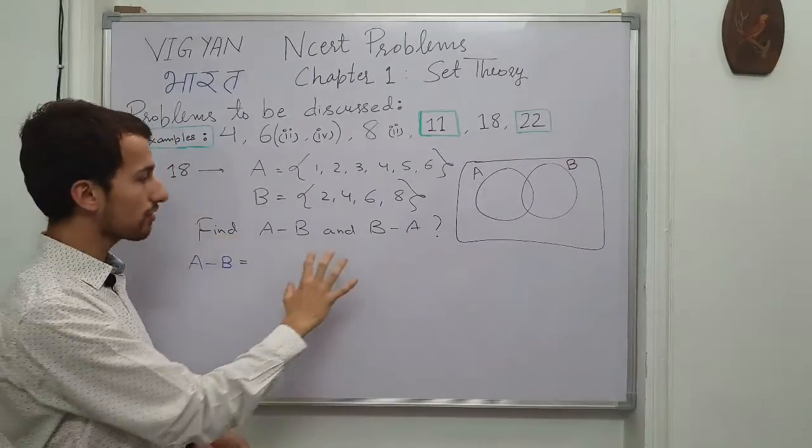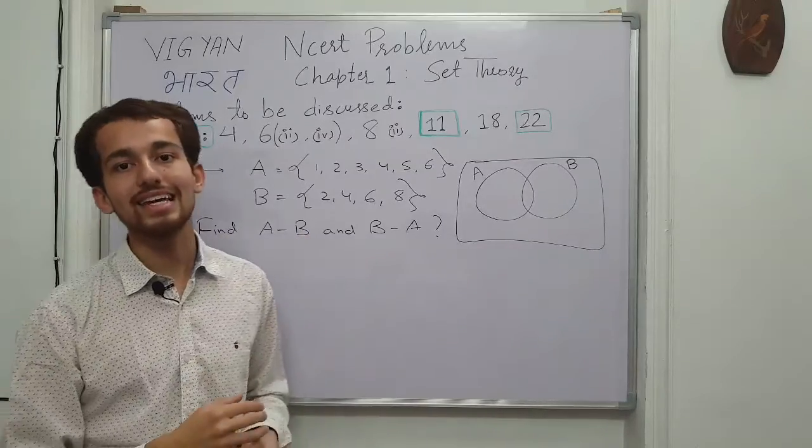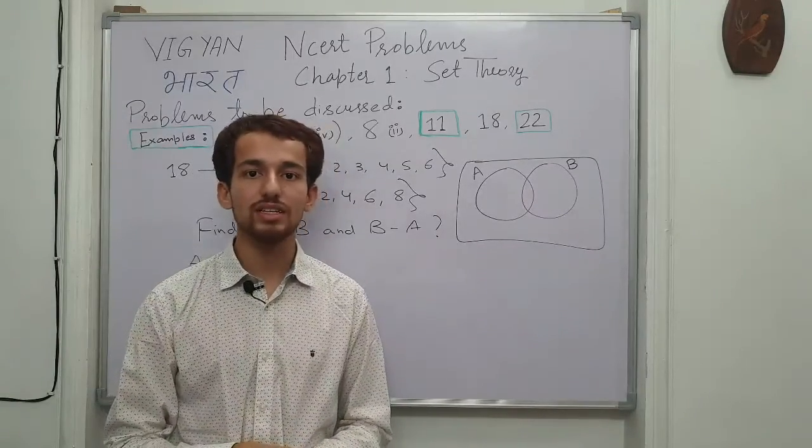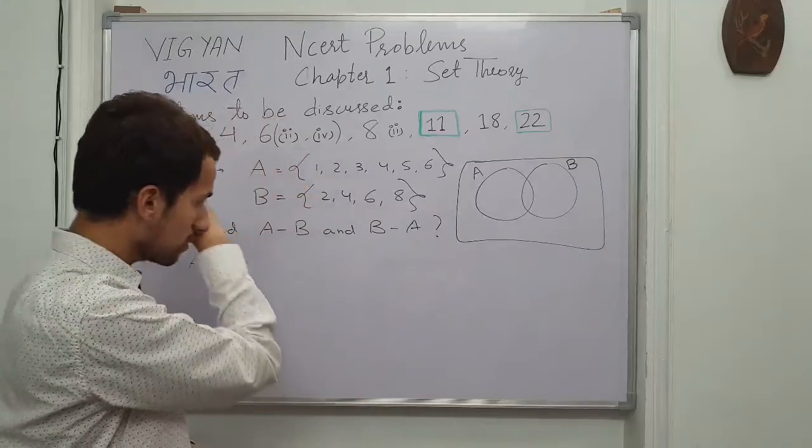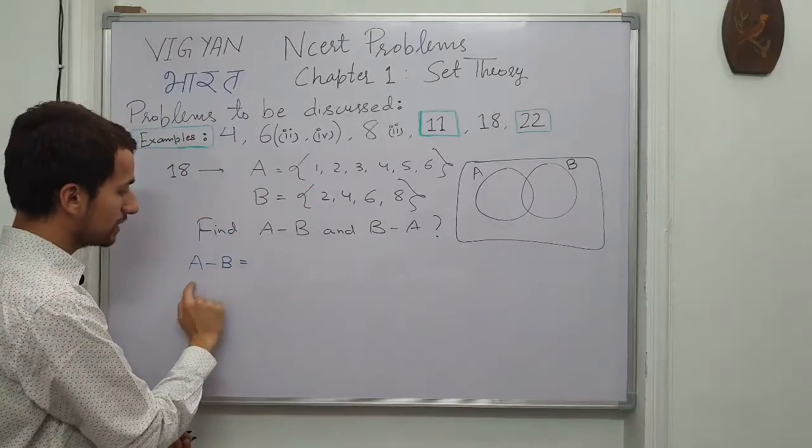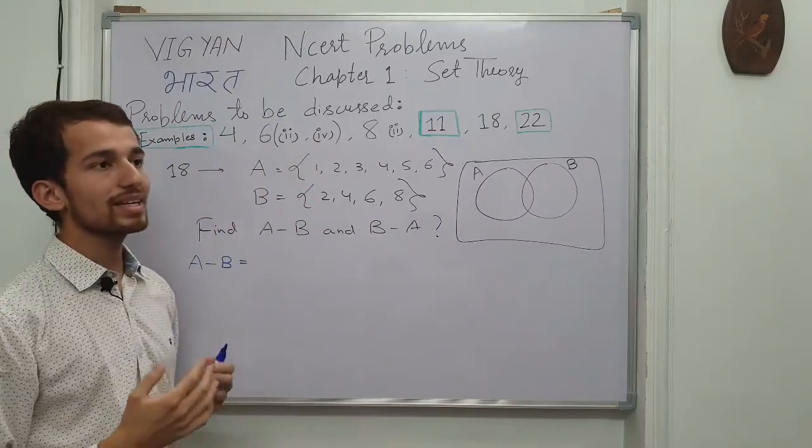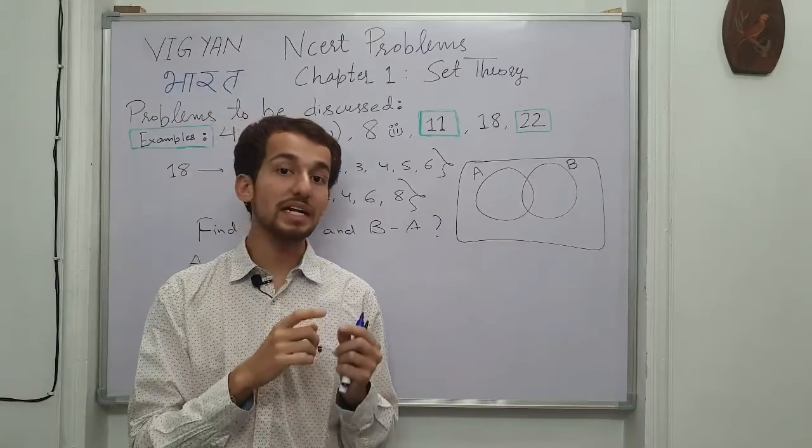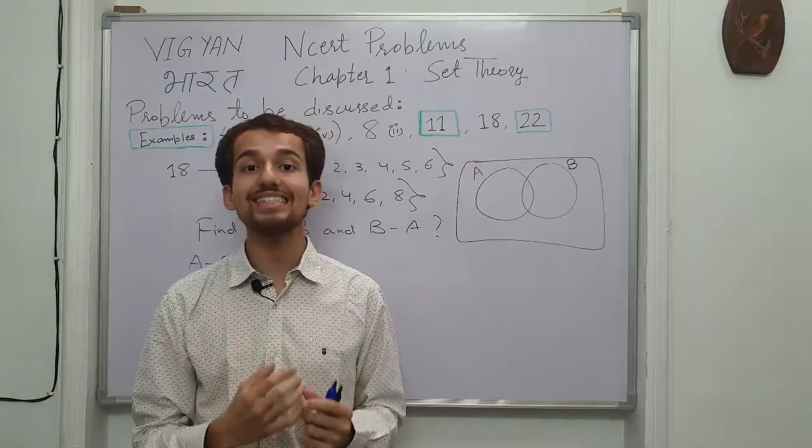So before finding this difference, first we recall what exactly the definition was of this set difference between two sets A and B. So basically A-B is nothing but the collection of those elements in the set A which are not present in the set B.